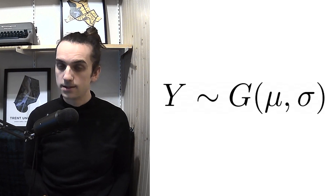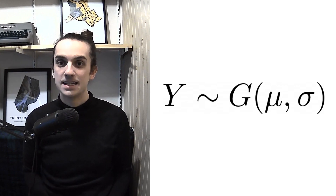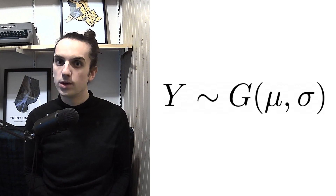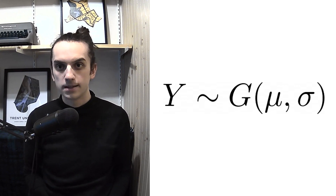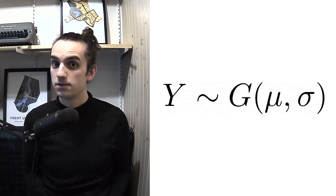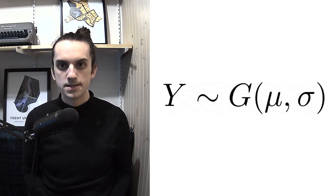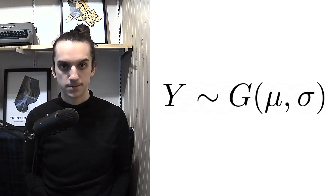To begin, let's try to discuss the question: what is linear regression? The idea, at its most basic, is quite simple. Suppose that we have a random variable, call it y, that we care about. We have seen in this course so far that if we assume a distribution for y, we can use estimation techniques to estimate parameters related to its distribution. Often we will make the assumption that y is Gaussian, and use maximum likelihood estimation to determine its mean parameter.